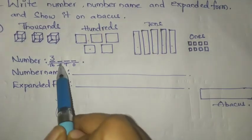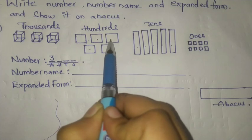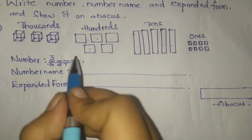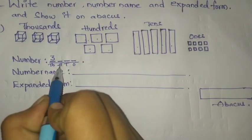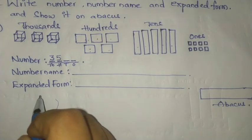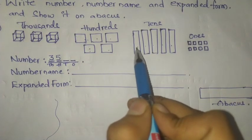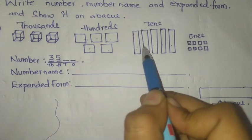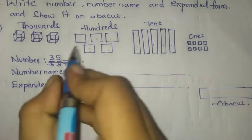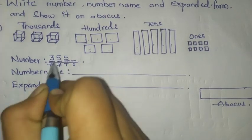How many hundreds are here? One, two, three, four, five — so at the hundreds place we write five. How many tens are here? One, two, three, four, five — so at the tens place we write five.